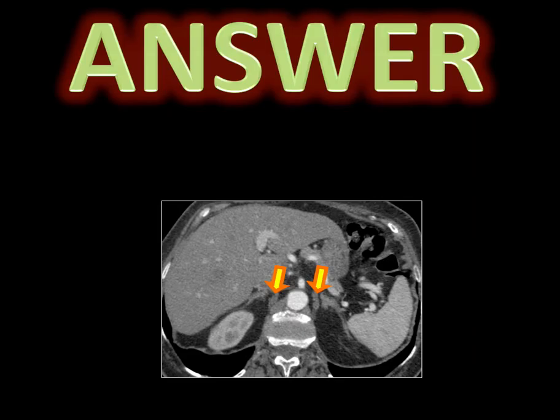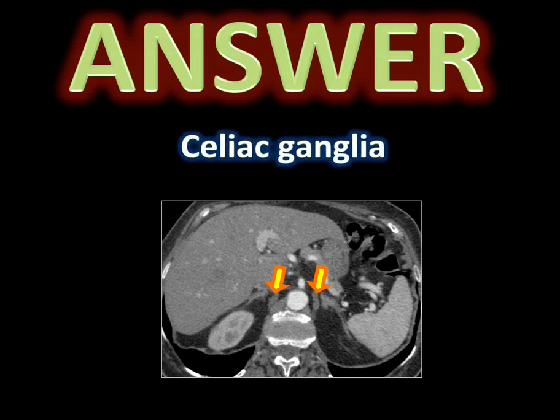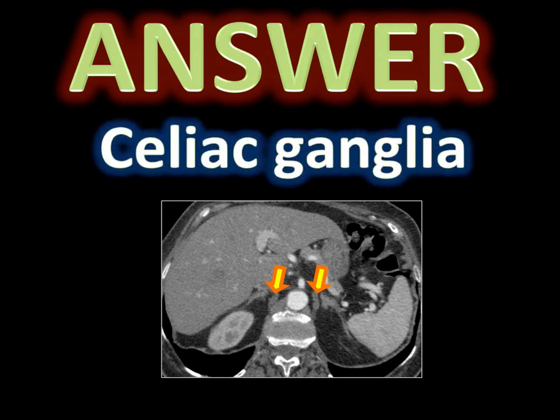Believe it or not, it's something that you can actually see on a CT scan. Once you know this, look at lots of your CT chest and abdomens and you're going to notice that this is clearly there. So the answer is the celiac ganglia.